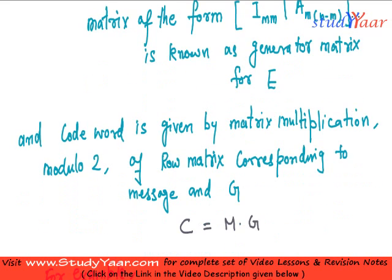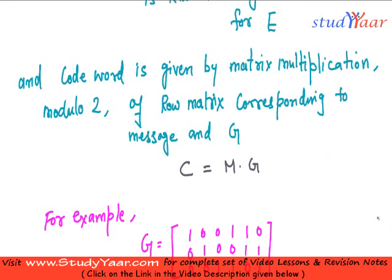And how do you generate the code word from it? You generate it by taking the message in the row matrix form and multiplying it with the generator matrix. What you get is your coded word in the row matrix form.